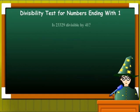So let's take a number, 23,329. Let us now check whether this number is divisible by 41 or not.